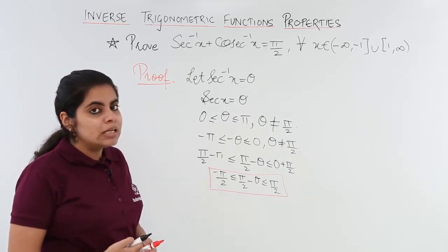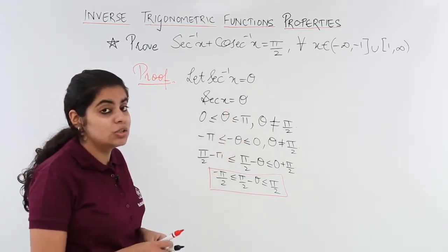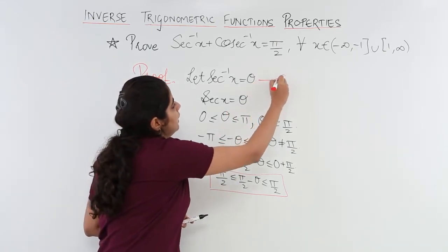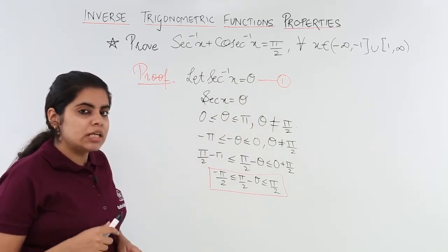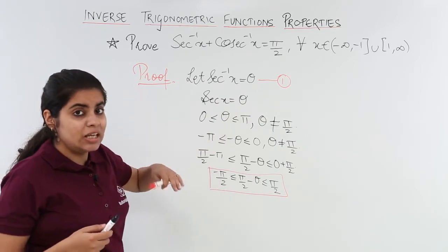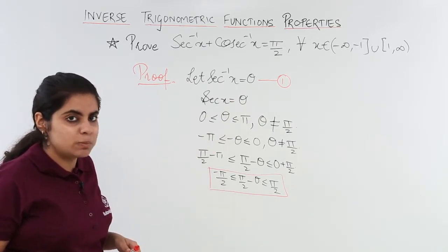The next step is to revert back to this step wherein I assumed sec⁻¹x = θ and put it as equation number 1. Now if sec⁻¹x = θ what changes can I expect?